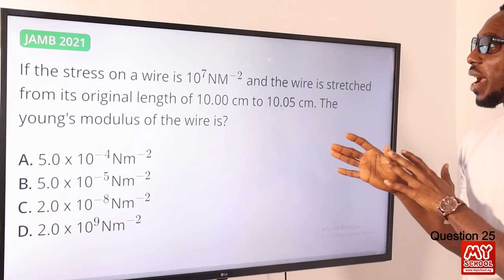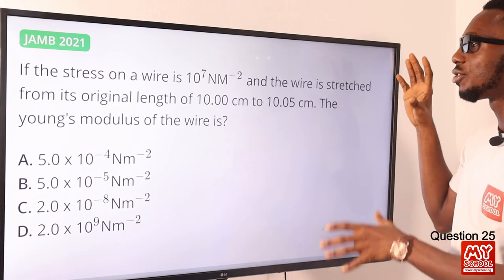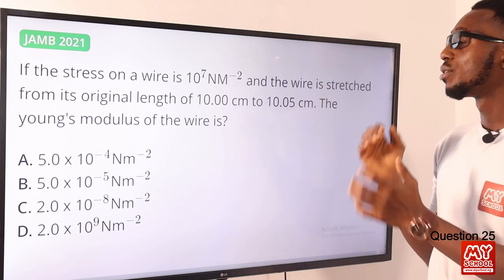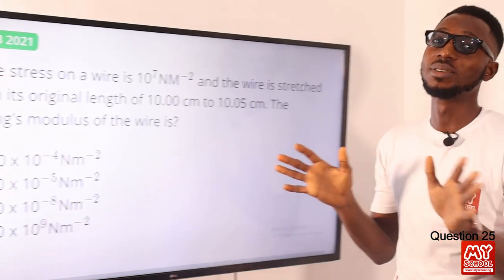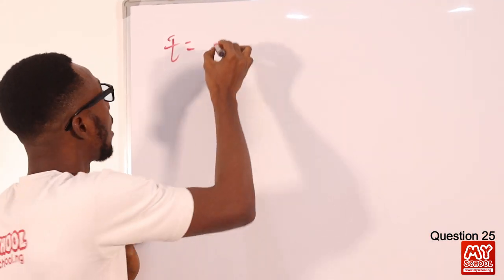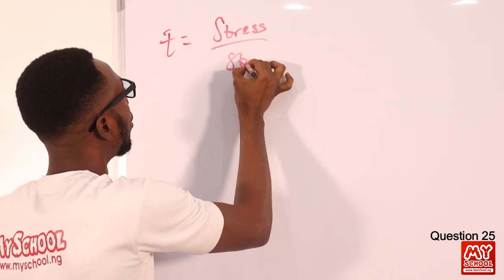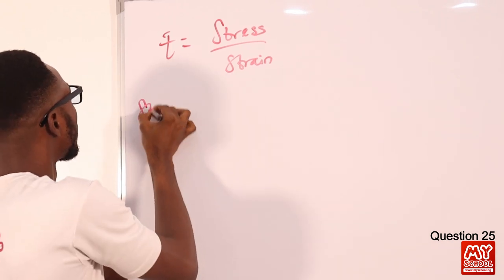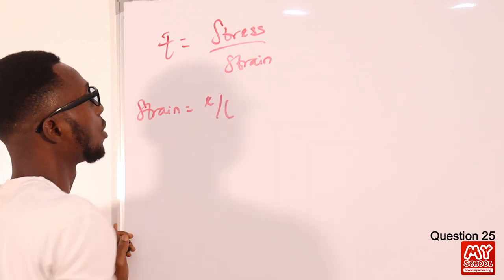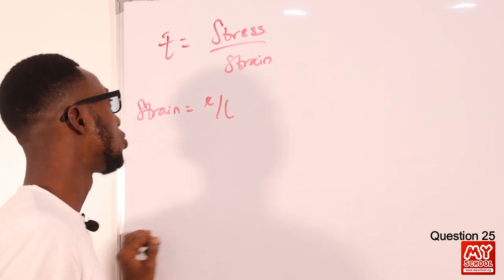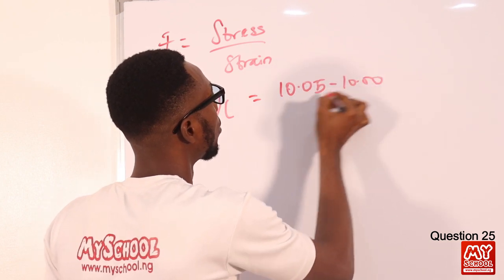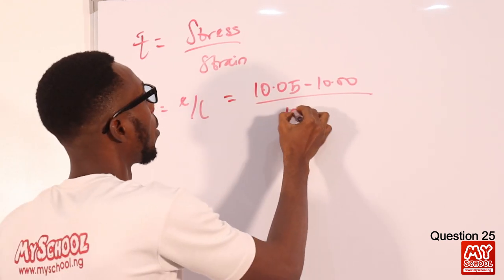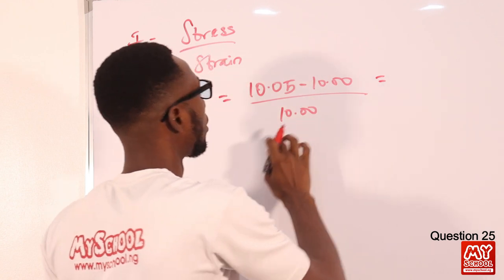Question 25: if the stress on a wire is 10⁷ N/m² and the wire is stretched from its original length of 10.00 cm to 10.05 cm, the Young's modulus is what? Young's modulus E = tensile stress / strain. Strain = extension / original length = (10.05 − 10.00) / 10.00 = 0.05 / 10.